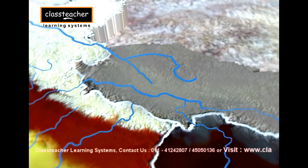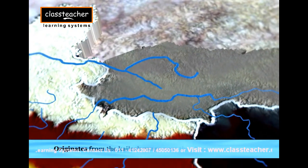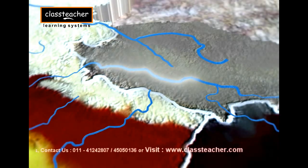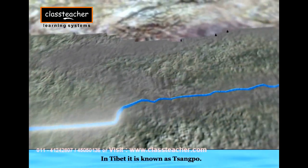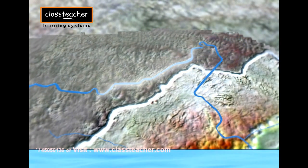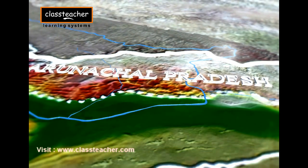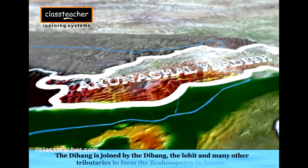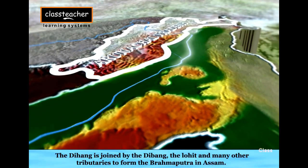The Brahmaputra, one of the largest rivers of the world, has its origin in the Chaimayongdung glacier in the Kailasa range near Mansarovar lake. From here it flows eastward parallel to the Himalayas, where it is known as the Songpo, which means 'the purifier.' The Namcha Barwa Peak obstructs the flow of the river and forces it to take a U-turn, thereby the river enters India in Arunachal Pradesh through a deep gorge. In this region, the river is popularly called Dihang and is joined by rivers Dibang, Lohit, and many other tributaries to form the Brahmaputra in Assam.